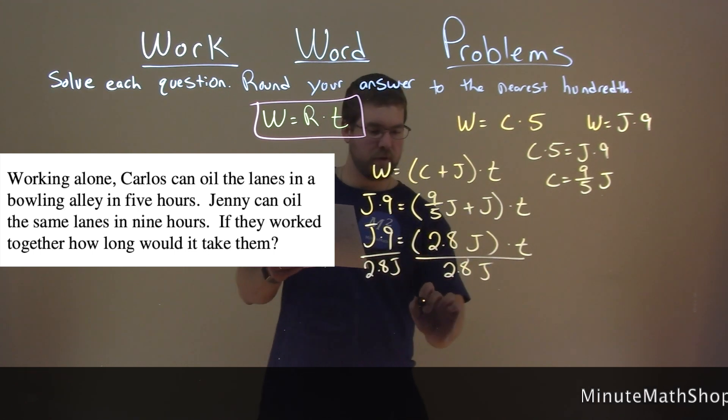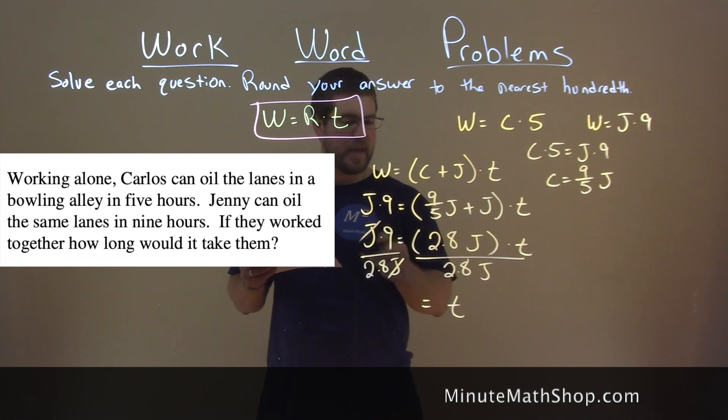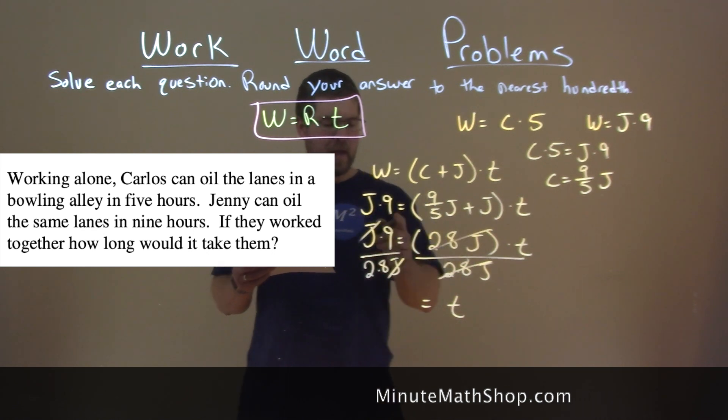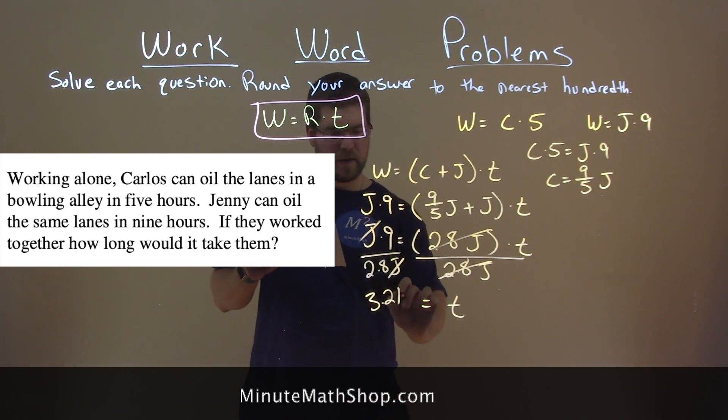And we're left with T by itself on the right. The J's here cancel. And nine divided by two point eight is three point two one hours.